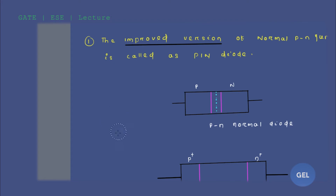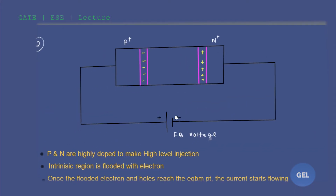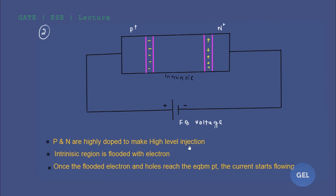The second point: connect a forward bias voltage to your PIN diode. The p and n regions are highly doped to make a high-level injection and also to maintain an ohmic contact. We will have a brief study on ohmic contact and rectifying contact after the LED topic — in the metal-semiconductor contact section, we'll study ohmic contact and rectifying contact in detail.